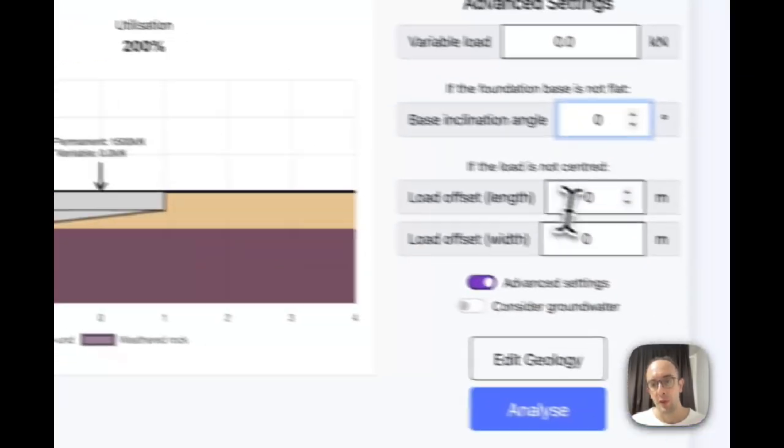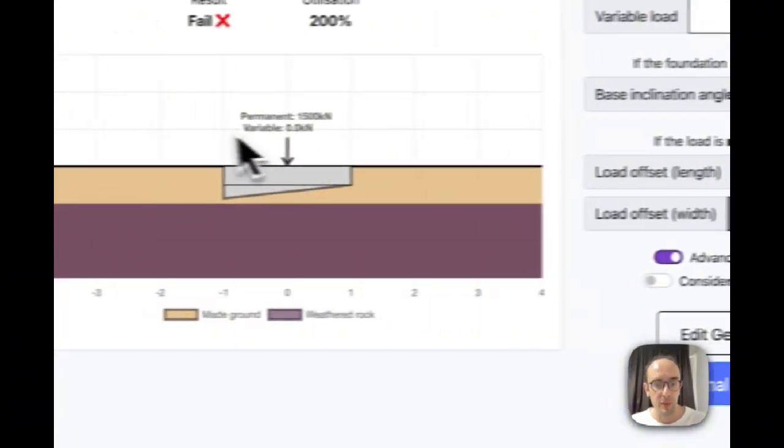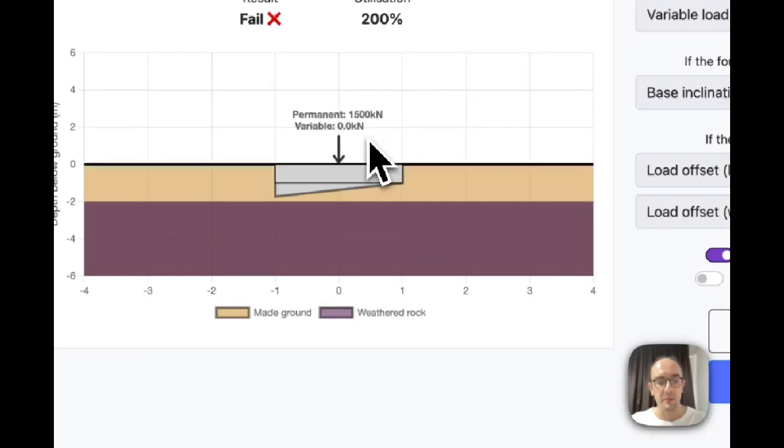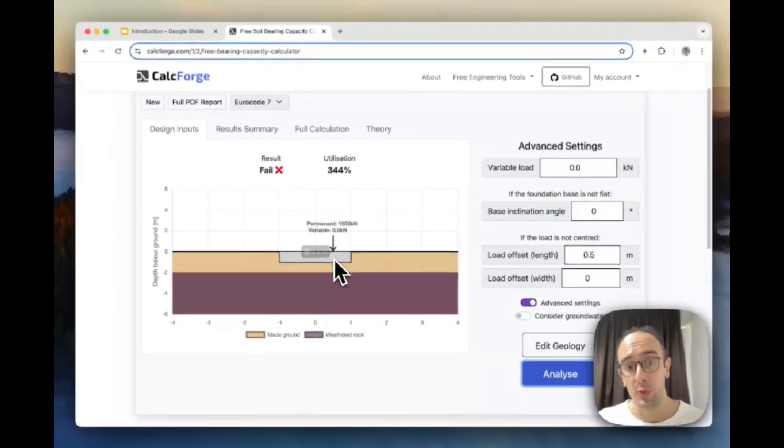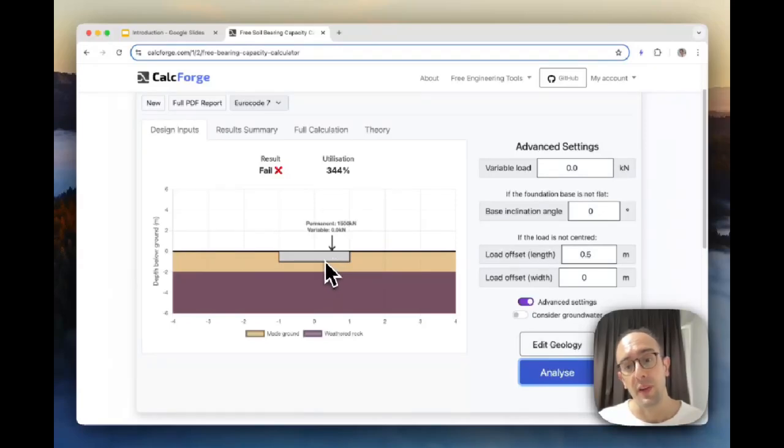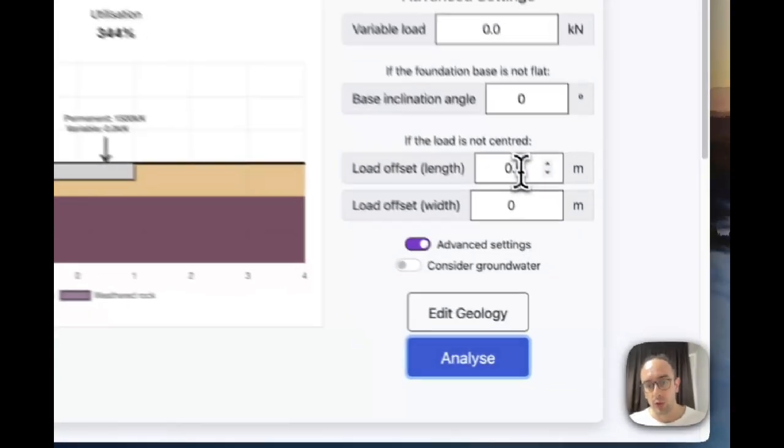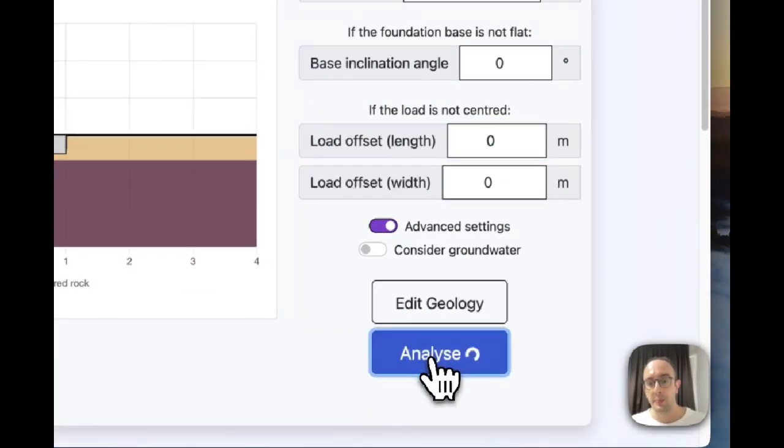And I can also offset this load from the center point, so I could say move it 0.5 meters offset. And again this will make it worse because you're forcing more pressure onto one side of the foundation than the other. I'll just return this back to the center.